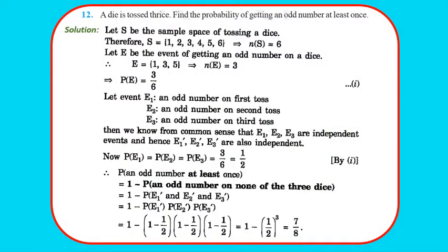Question 11: A die is tossed thrice; find the probability of getting an odd number at least once. Odd numbers on a die: {1, 3, 5}, so P(odd) = 3/6 = 1/2. P(at least one odd) = 1 - P(no odd on any of three tosses) = 1 - (1/2)³ = 1 - 1/8 = 7/8.